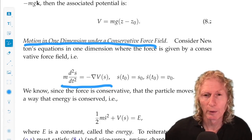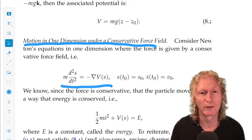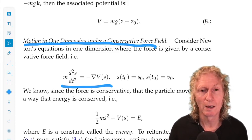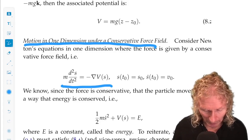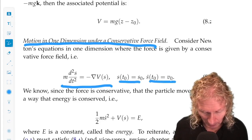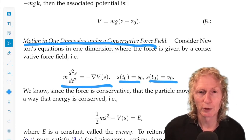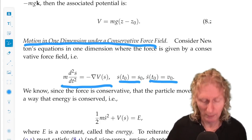So the equations are m times the second derivative of s with respect to t equals minus the gradient of the potential energy function, which is just a function of s, and we have initial conditions, initial position and initial velocities at a given time.